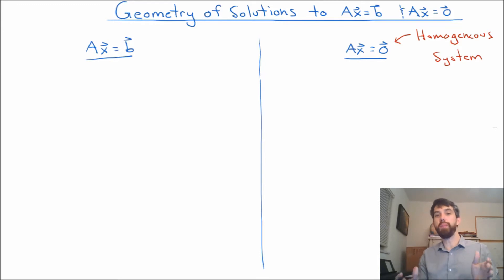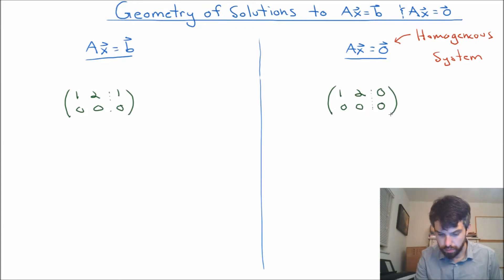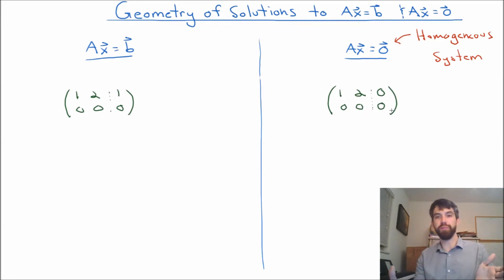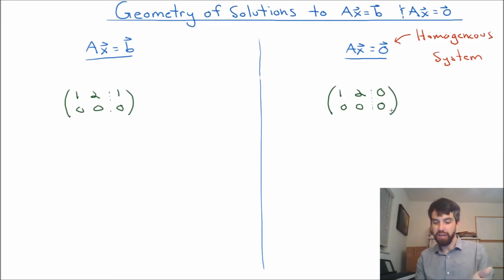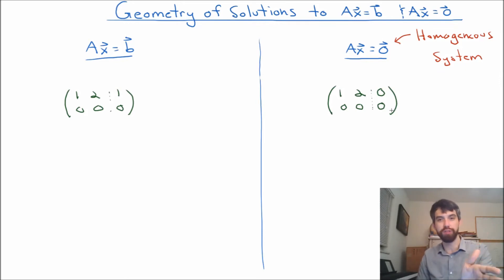Let me put up a simple system for each of these two different cases. We have these two different linear systems, and I can solve both of them. I note that they have the same A — it's just a difference in what b is. One is non-zero and one is zero.